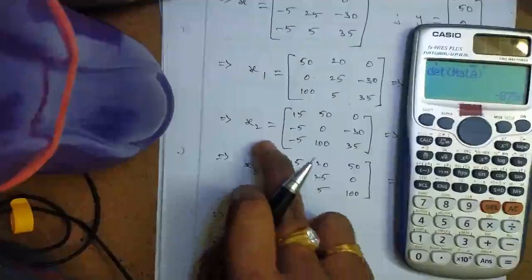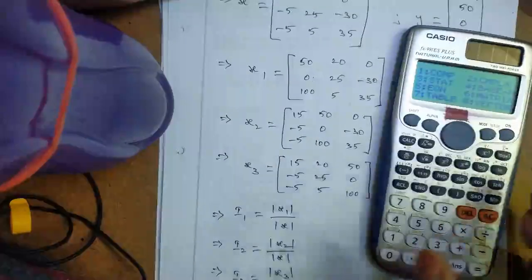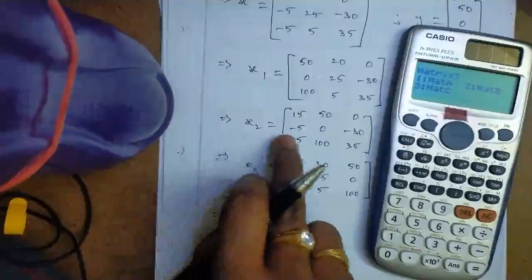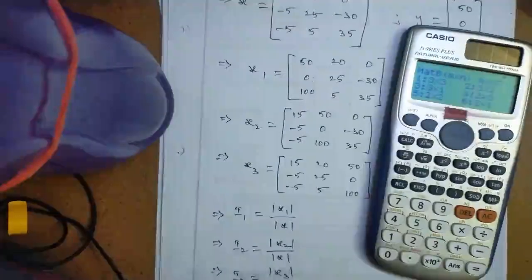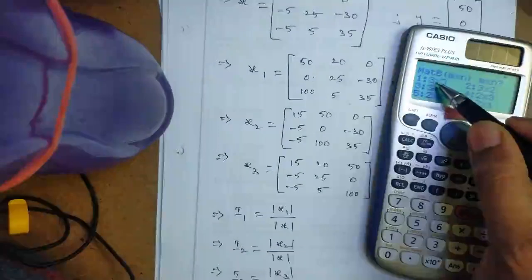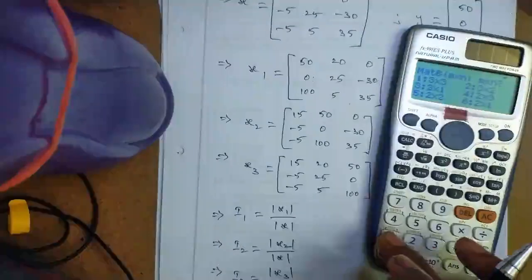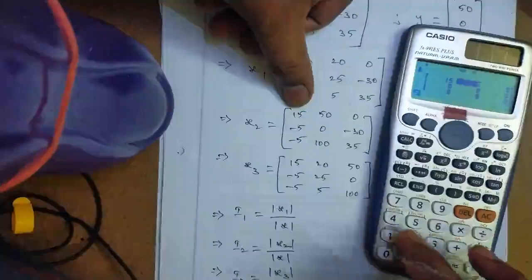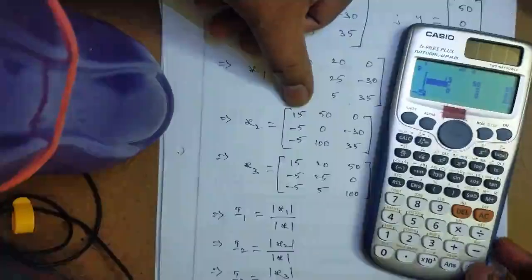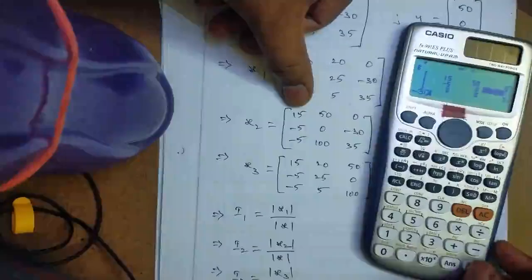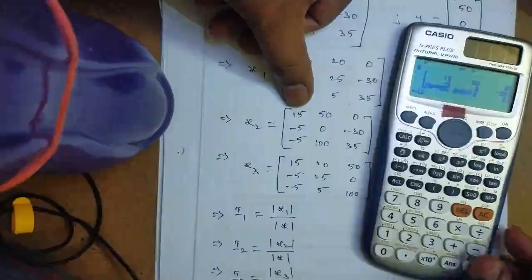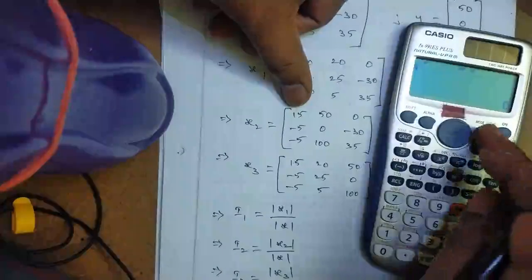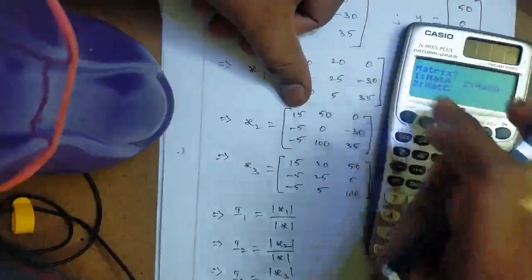Similarly, we enter X2 and X3. Press mode, press 6. I enter matrix X2 in matrix B. Press 2, select 3 by 3. Enter matrix X2 values: 15, 50, 0, minus 5, 0, minus 30, minus 5, 100, 35. Matrix B is stored. Again press mode, press 6, option 3 for matrix C.